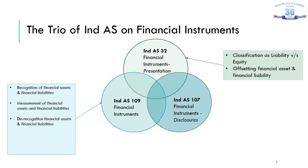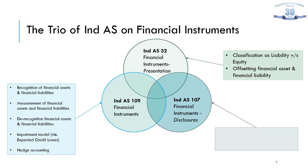IND AS 32 also deals with provisions of offsetting of financial assets with liabilities and vice versa, where certain criteria must be met. IND AS 109 also deals with a new impairment model on financial assets and liabilities, with the intent to provision expected losses based on past trends, present conditions and forward-looking statements, so that credit losses are provisioned proactively before they are incurred. IND AS 109 also deals with hedge accounting, a completely new concept. IND AS 107 pertains to disclosures, laying down a plethora of required disclosures in the financial statements. These three standards must be read, understood and diagnosed together.